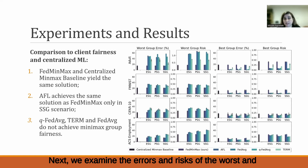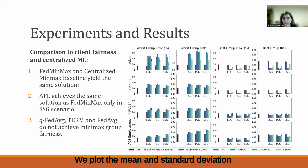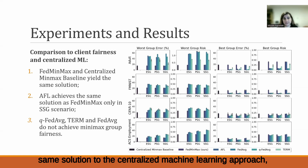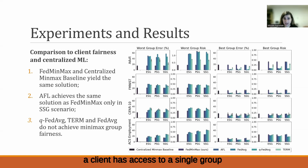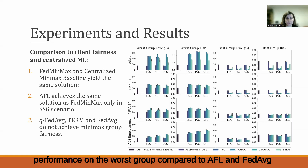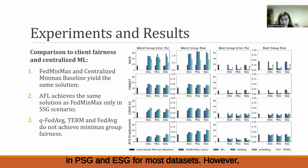We examine the errors and risks of the worst and best groups for the Adult, Fashion MNIST, CIFAR-10, and ACS Employment datasets. We plot the mean and standard deviation of the metrics on the respective test sets. The results indicate that FedMinMax yields the same solution as the centralized machine learning approach, validating our theoretical result. AFL performance is comparable to FedMinMax only in scenarios where a client has access to a single group. Q-FedAvg performs better on the worst group compared to AFL and Federated Averaging in partial and equal sensitive group settings for most datasets, but never achieves minimax group fairness in any federated learning setting.